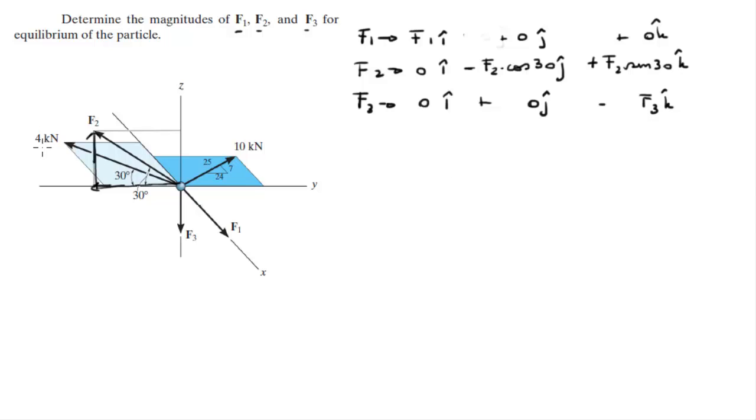We have F1, F2, and F3, but we also have two more forces: this 4 kN and this 10 kN. The 4 kN force has a negative x component and a negative y component, and no z component. So it's -4 sin(30°) i - 4 cos(30°) j + 0 k.